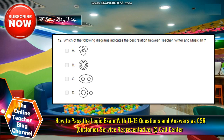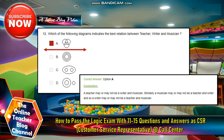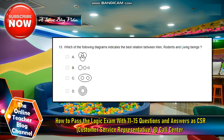Number 12. Which of the following diagrams indicates the best relation between teacher, writer, and musician? And so a writer may or may be a teacher and musician. Number 13.